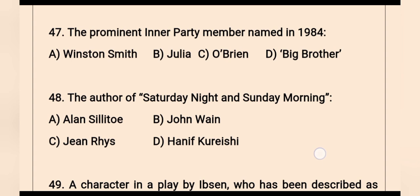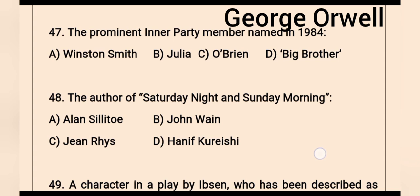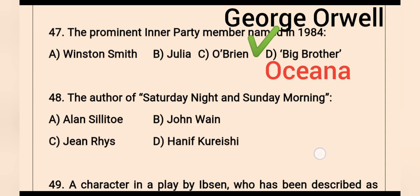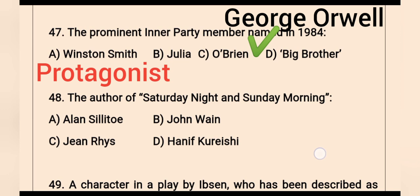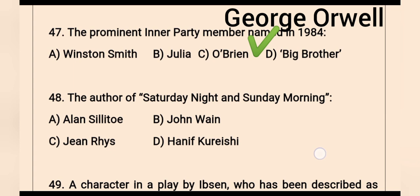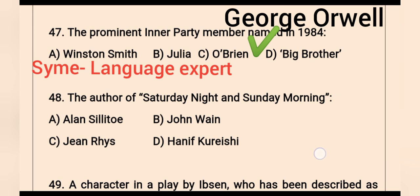Question 47: The prominent inner party member named in 1984 — 1984 is a dystopian social science fiction by George Orwell published in 1949. The prominent inner party member named in the novel is O'Brien. Other prominent characters include Big Brother, the leader of Oceania, a totalitarian state; Winston Smith, the protagonist and everyman; Emmanuel Goldstein, the principal enemy of the state; and Syme, a language expert and colleague of Winston Smith who works with him at the Ministry of Truth.